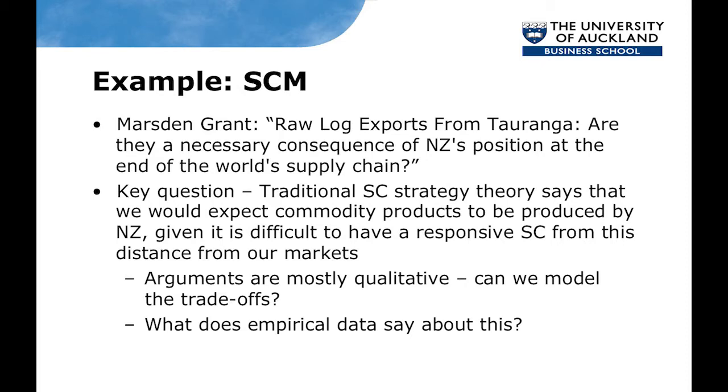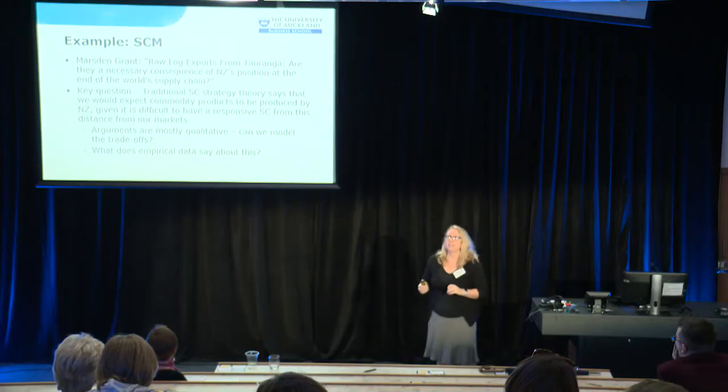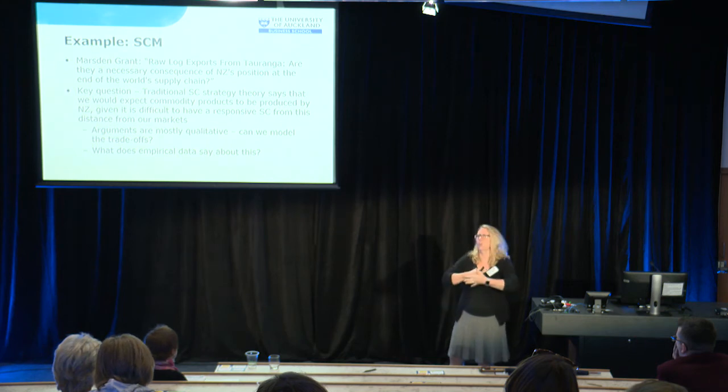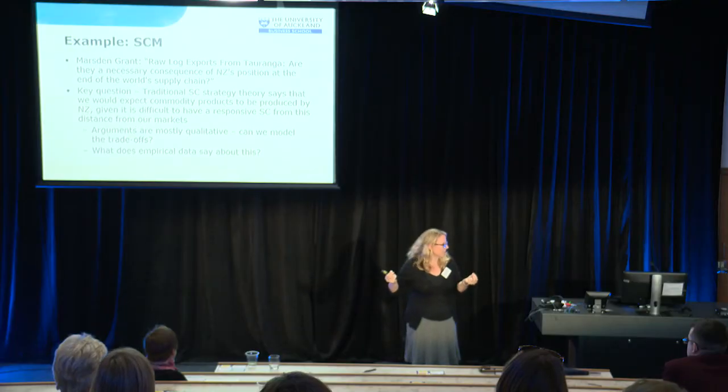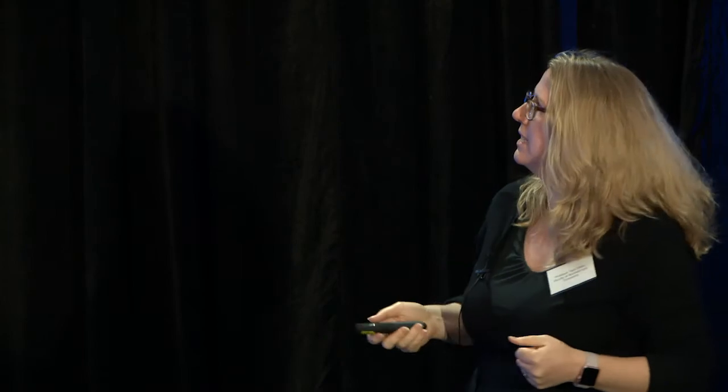The last example is a supply chain model I have a Marsden grant for: are raw log exports from Tauranga a necessary consequence of New Zealand's position at the ends of the world supply chain? Traditional supply chain strategy theory would say it's a natural consequence of being so far from market — the natural strategy is an efficient supply chain, and an efficient supply chain is not one where you have value-added products. That's a very negative story. What we want to do — and are doing — is modelling these trade-offs quantitatively, asking where the opportunities are, and also looking at Stats NZ data to say something empirically.